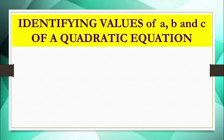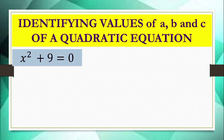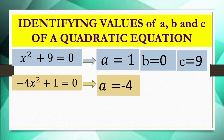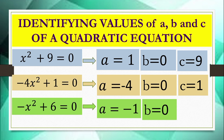Now let's identify the values of a, b, and c in the form ax² plus c equals 0. For x² plus 9 equals 0: a is 1, b is 0, and c is 9. For negative 4x² plus 1 equals 0: a is negative 4, b is 0, and c is 1. For negative x² plus 6 equals 0: a is negative 1, b is 0, and c is 6. In the ax² plus c equals 0 form, the value of b is always 0.